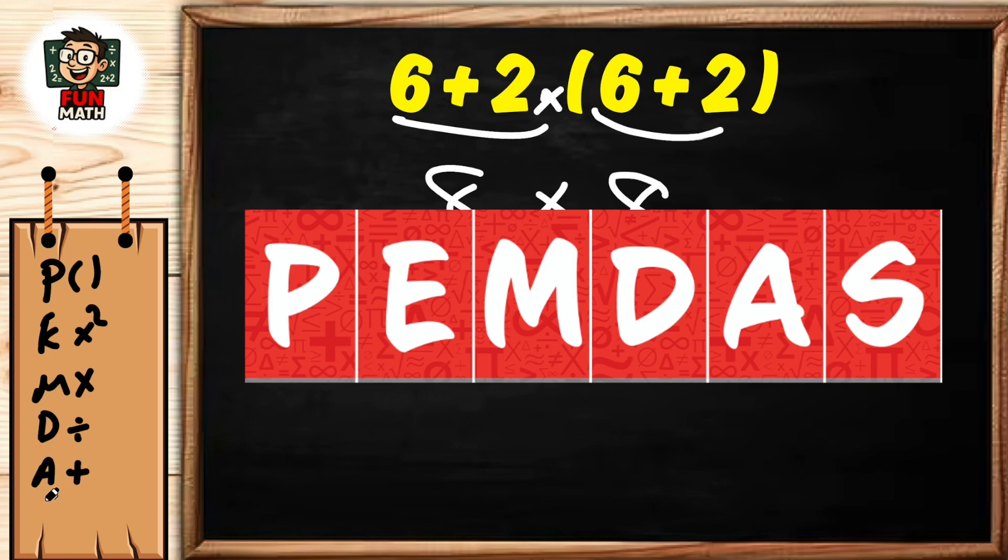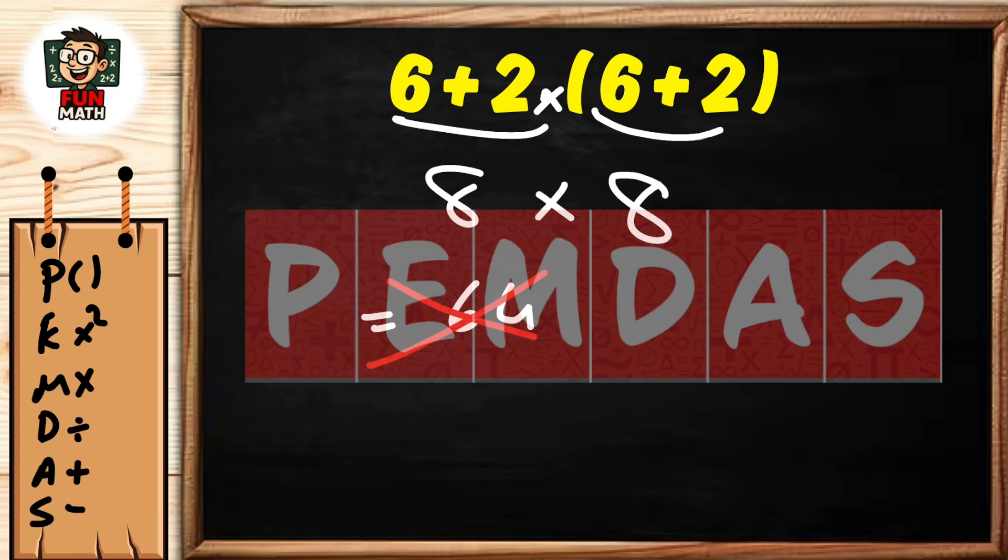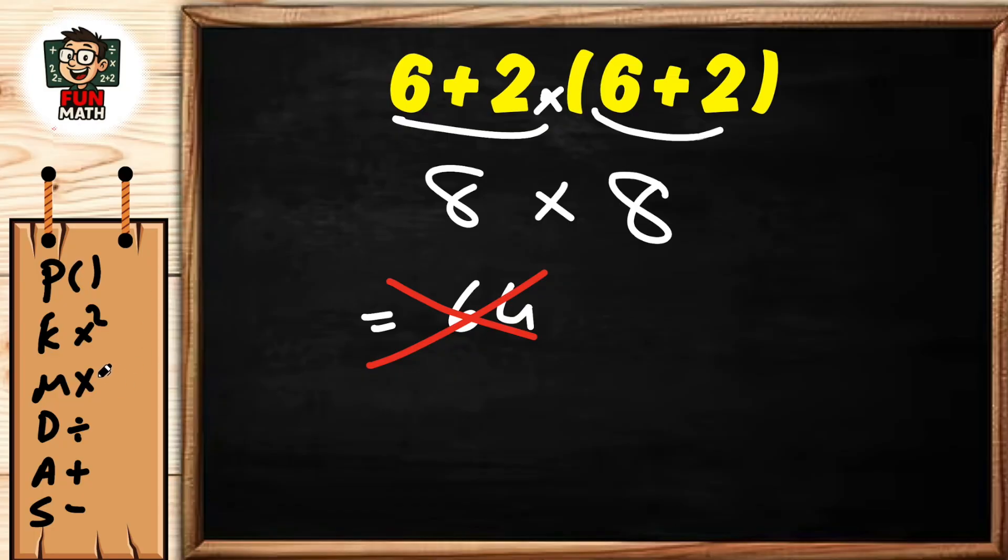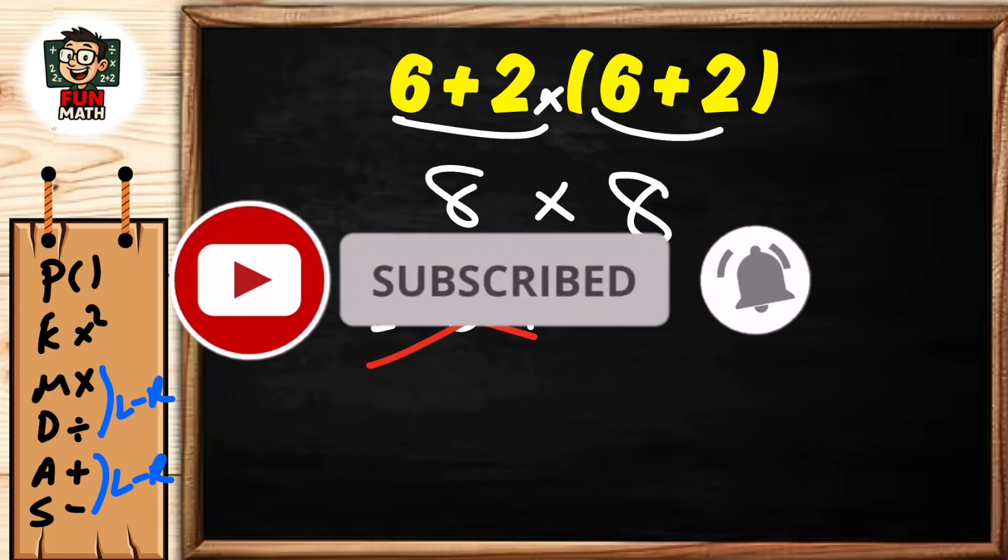A stands for addition, S stands for subtraction. We have one more feature here: there is no order between multiplication and division—operations are performed from left to right. Similarly, there is no order between addition and subtraction—operations are performed from left to right. Let's apply this rule to our equation.